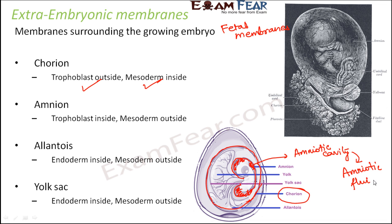The amniotic cavity is filled with a clear, watery fluid known as amniotic fluid. Since this fluid is present all around the embryo, it provides a cushion-like protection, protecting the embryo from any kind of shock or external movement.